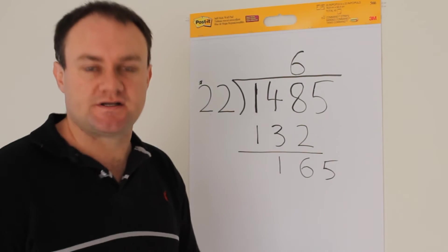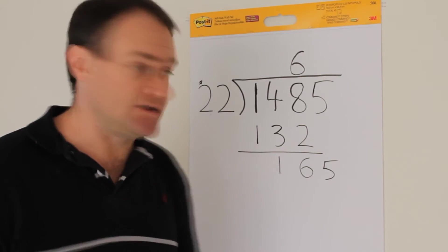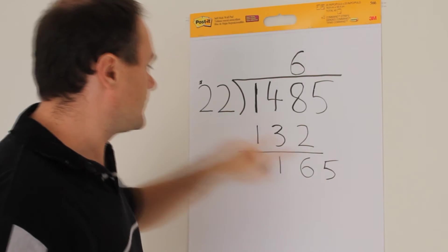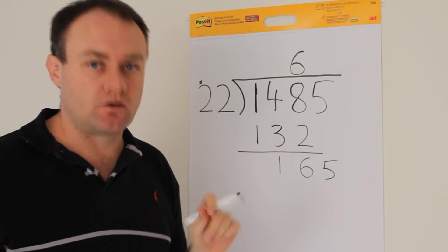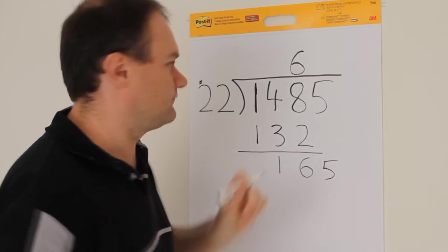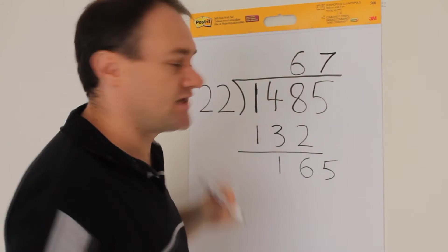So if I say, well, I know that 8 twos are 16, therefore I know that 8 twenties are 160. Just as before, I kind of get the realization that 8 is going to be too big, so I'll drop down one and try with 7. So up goes my 7.